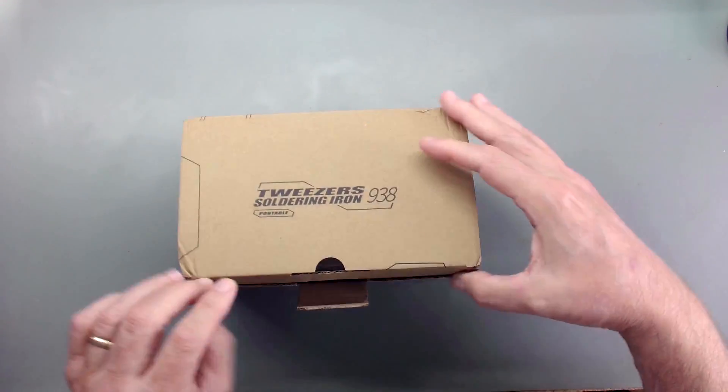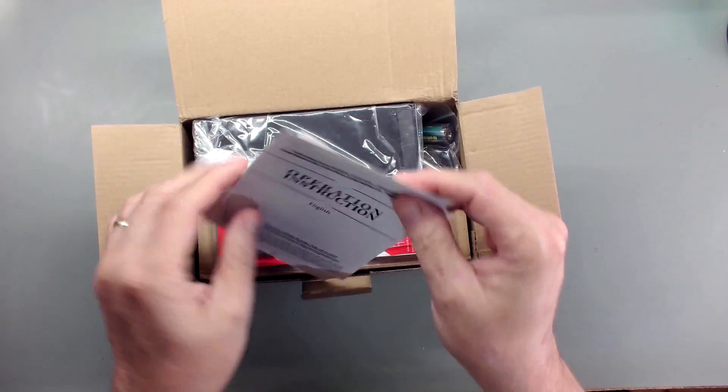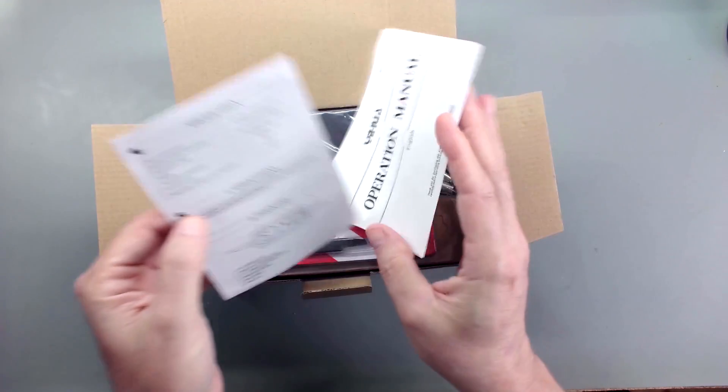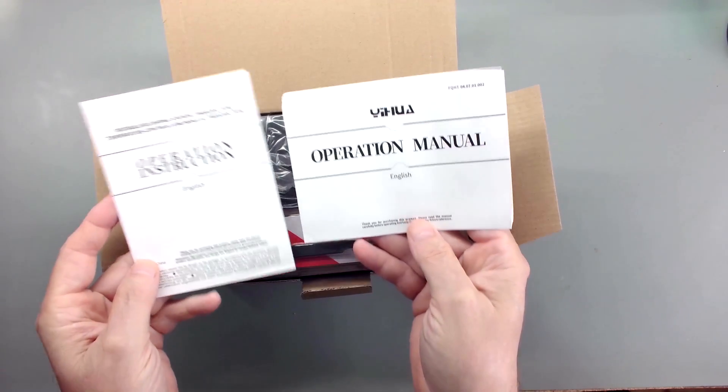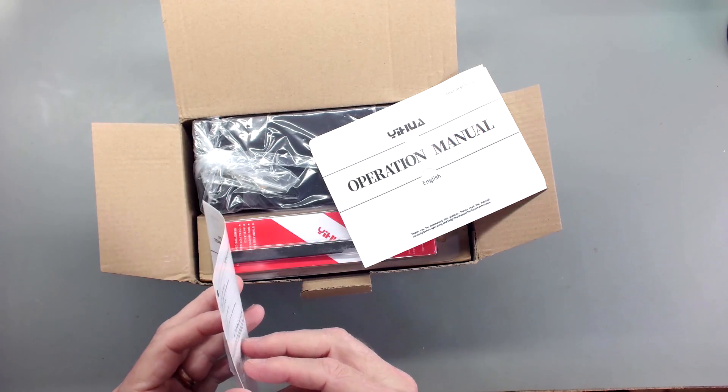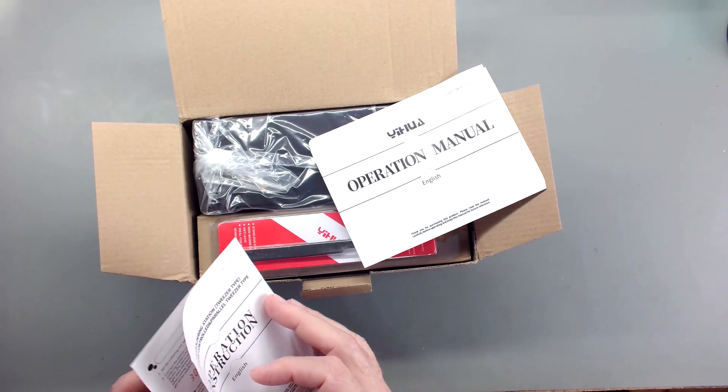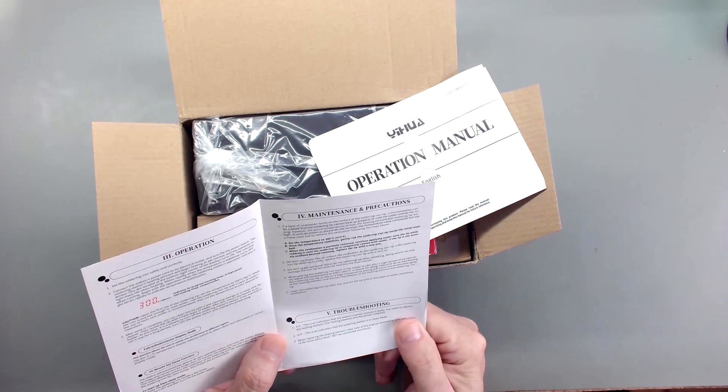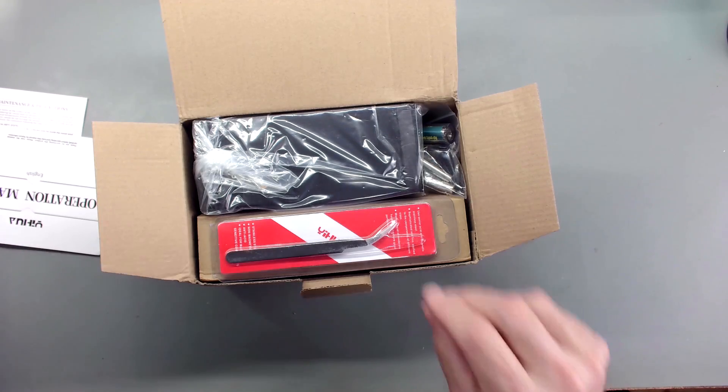Your typical cardboard box. You've got English instructions along with operation manual. The brand is Yaha, and if you've noticed that's the soldering station and the soldering vacuum pump both come from them and seem to work pretty good. Let me finish the box and take a look.